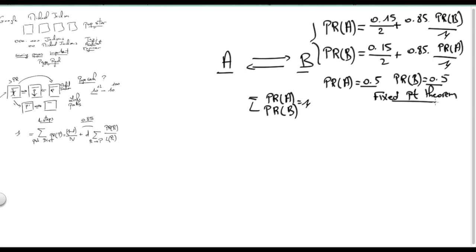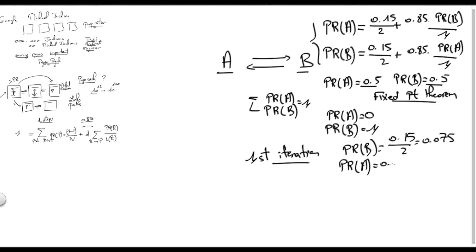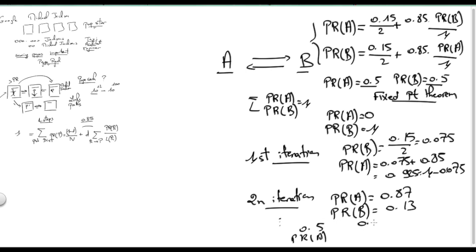So for instance, if we start from PR of A equals 0 and PR of B equals 1, then after a first iteration, we will compute, for instance, that PR of B equals 0.15 over 2, which is 0.075. And PR of A will be 0.075 plus 0.85, which is 0.925 or if we want 1 minus 0.075. After the seventh iteration, and I will go quickly here, will yield PR of A equals 0.87 and PR of B roughly 0.13. After a few iterations, we will end up with 0.5 for A and 0.5 for B.